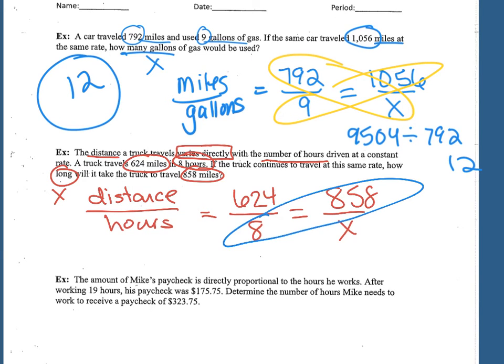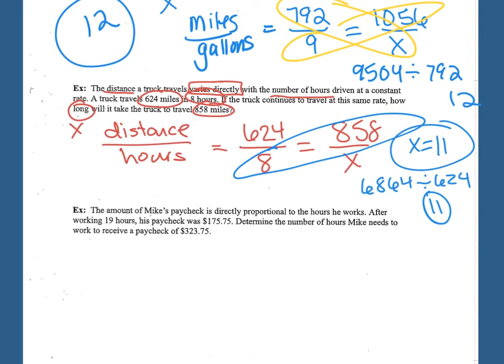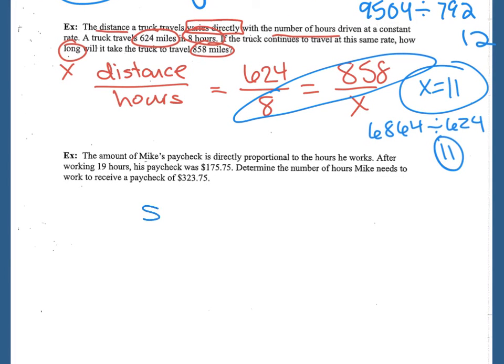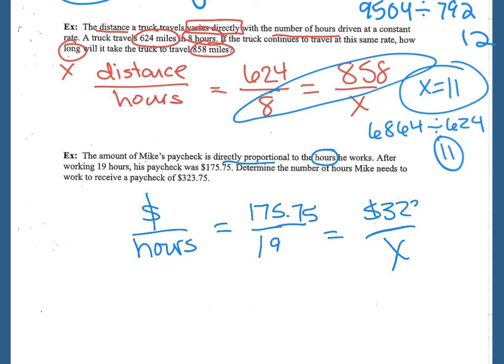So cross multiply, 858 times 8, divided by 624. So 11 hours to travel 858 miles. The amount of Mike's paycheck is directly proportional. So the money is directly proportional to the amount of hours he worked. After working 19 hours, his paycheck was $175.75. Determine the number of hours Mike needs to work to receive a paycheck of $323.75. So we want to cross multiply and divide.